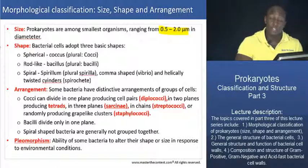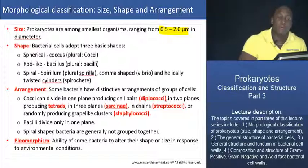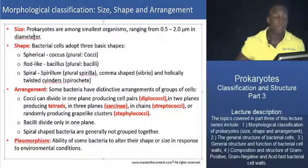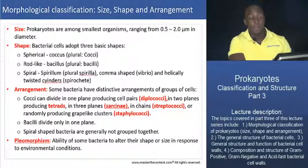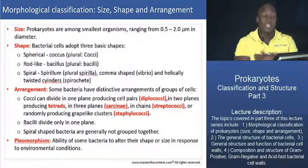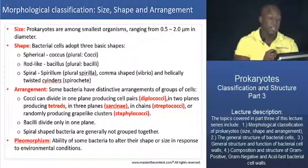As far as size is concerned, bacteria are very small organisms — about 0.5 to 2 micrometers in diameter, which is pretty small. When we're talking about eukaryotic cells, they can be in the range of anywhere from 10 to 100 micrometers in diameter. So prokaryotes are pretty small cells in and of themselves.